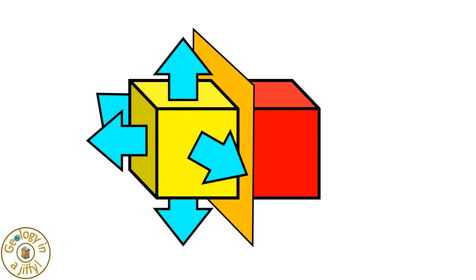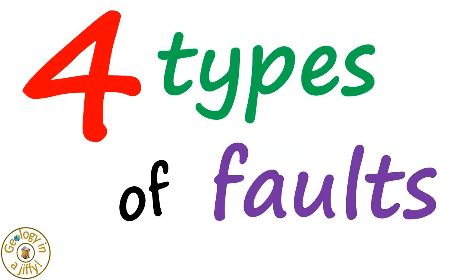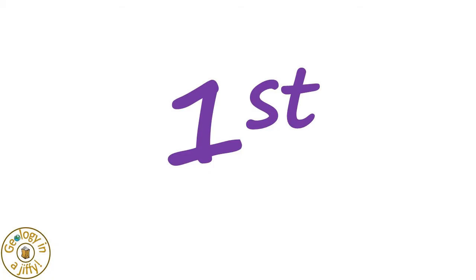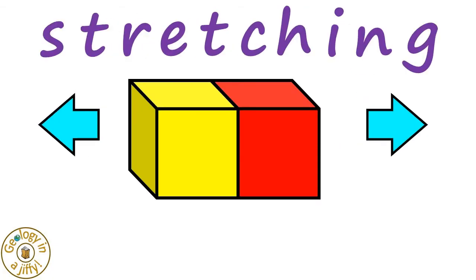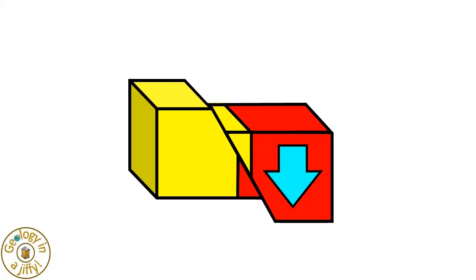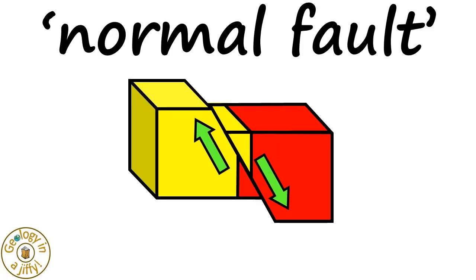These movements result in four main types of faults, which we can demonstrate using our two blocks of rock. The first type of fault happens when rocks are stretched apart, causing one block to move downwards in relation to the other block, creating a normal fault.